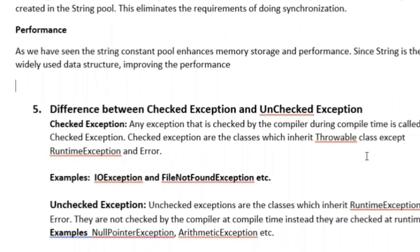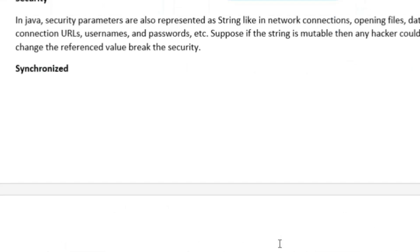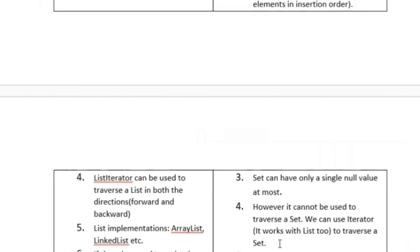The next question is: what is the difference between a checked exception and an unchecked exception? A checked exception is any exception that is checked by the compiler at compile time. Checked exceptions are classes that inherit from the Throwable class except RuntimeException and Error. Examples of checked exceptions are IOException and FileNotFoundException. Unchecked exceptions are classes that inherit RuntimeException and Error — they are not checked by the compiler at compile time but are checked at runtime. Examples of unchecked exceptions are NullPointerException and ArrayIndexOutOfBoundsException.